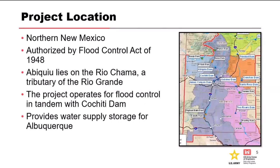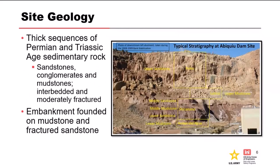Abiquiu Dam is located in northern New Mexico, on the Rio Chama, which is a tributary of the Rio Grande. The primary purpose of this project is for flood control and water storage for the city of Albuquerque. The geology at the site consists of a thick sequence of Permian and Triassic age sedimentary rock, composed of moderately fractured sandstones, conglomerates, and mudstones.